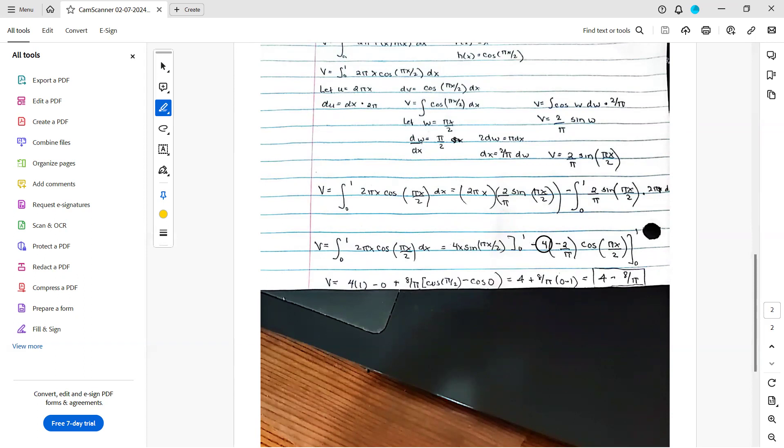Now I need to do this other piece. I have positive 8 over pi, and it's cosine of 1 half. Cosine of pi over 2 is 0. So I have 0 here, right? And then I subtract, and I get cosine of 0, which is 1. So I have minus 1, and I have 8 over pi times 0 minus 1. If I clean that up, that gives me 4 minus, because 0 minus 1 is negative 1, 4 minus 8 over pi. And that final expression is my answer.